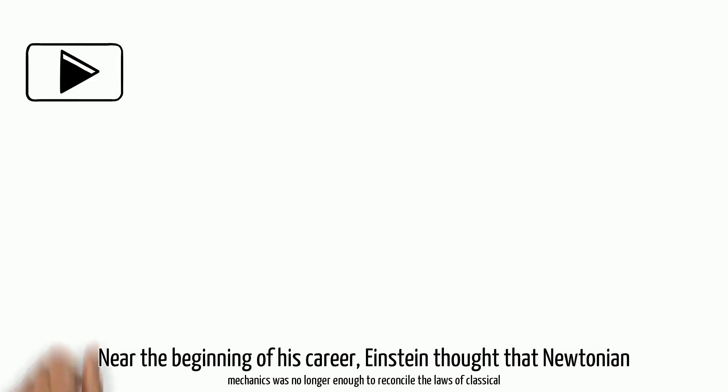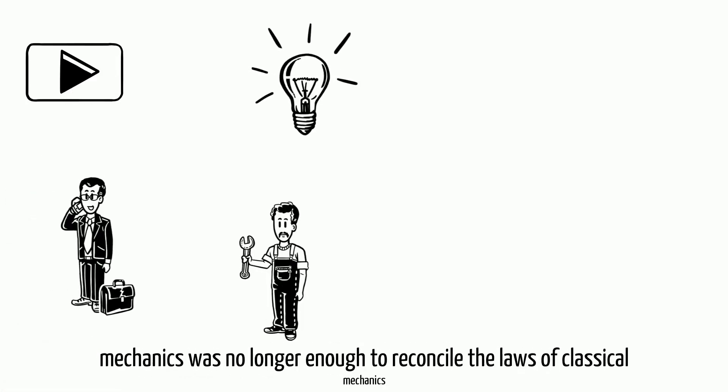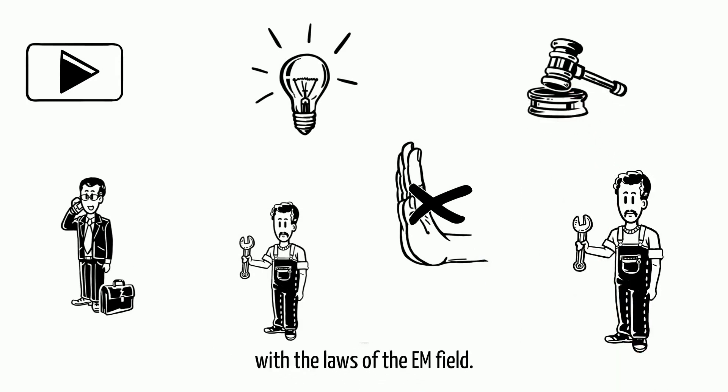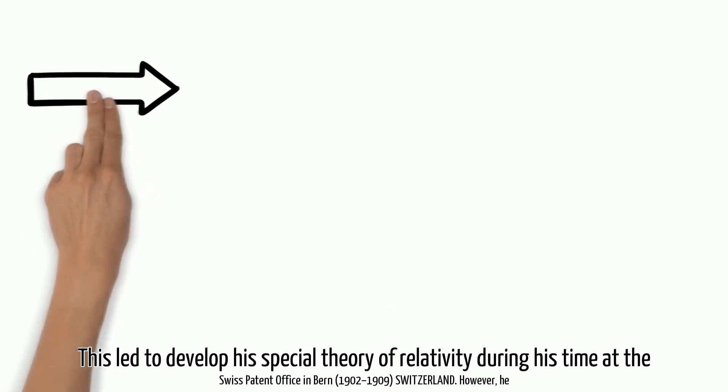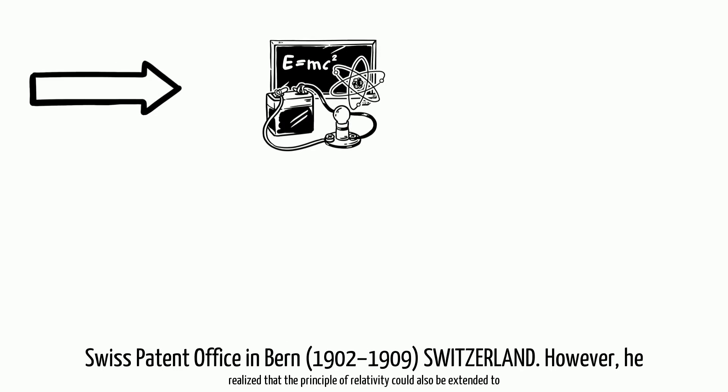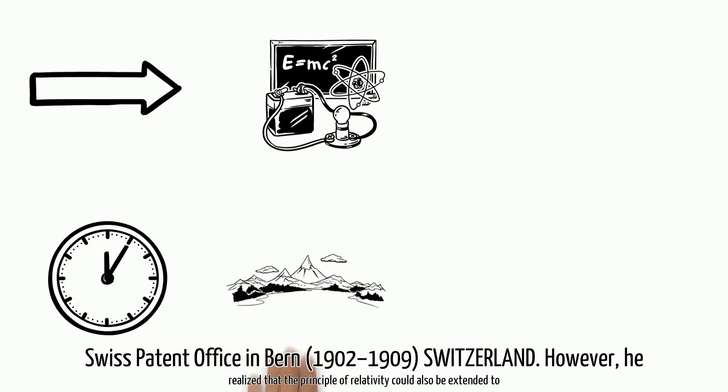Near the beginning of his career, Einstein thought that Newtonian mechanics was no longer enough to reconcile the laws of classical mechanics with the laws of the electromagnetic field. This led him to develop his special theory of relativity during his time at the Swiss patent office in Bern, 1902 to 1909, Switzerland.